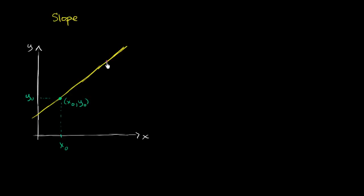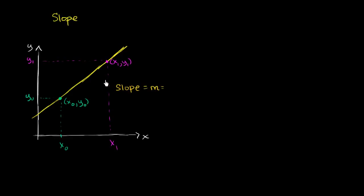And let's say we have another point all the way over here, where this x value is x sub 1 and the y value is y sub 1. So this is the point (x₁, y₁). As a review, the slope of this line — and a line by definition has a constant slope between any two points you pick — the slope, often denoted by the letter M, is your rate of change of y with respect to x. For a given change in x, how much are you changing y?